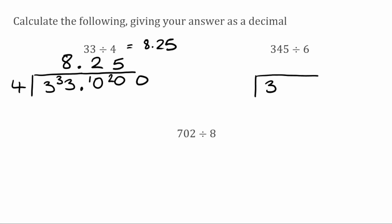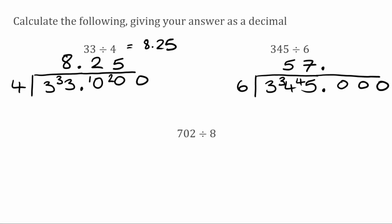We've now got 345 divided by 6. How many times does 6 fit into 3? Well it doesn't, so we're going to carry that 3 over. How many times does 6 fit into 34? Well that'll go 5 times, because 6 times 5 is 30, leaving us with a remainder of 4. How many times does 6 fit into 45? Well that'll go 7 times, because 7 times 6 is 42, leaving us with a remainder of 3. So because we've still got a remainder, we're going to extend our line, put a decimal in the answer, a decimal after our 345, and put some zeros. 7 times 6 was 42, we needed 45, so there was a remainder of 3. How many times does 6 fit into 30? Well that fits 5 times exactly, so the answer to this one would be 57.5.